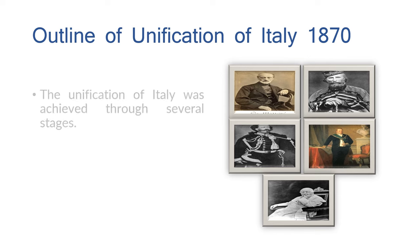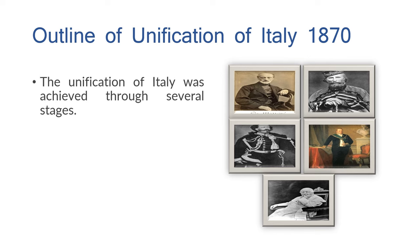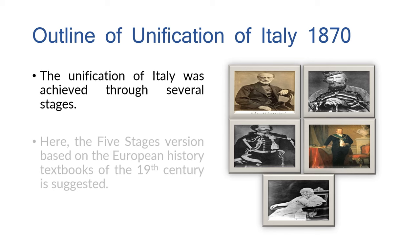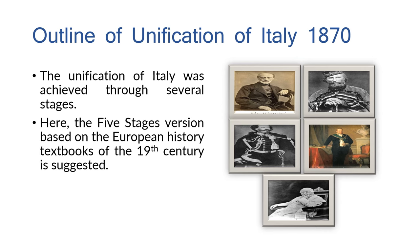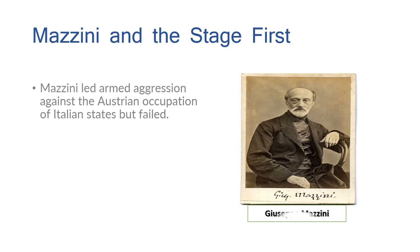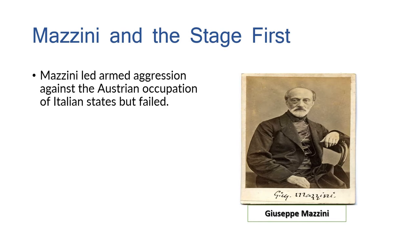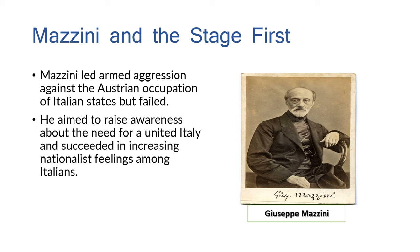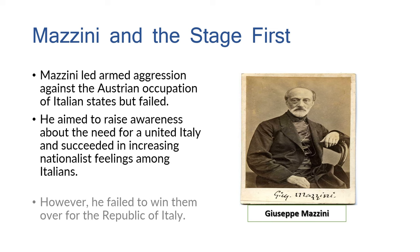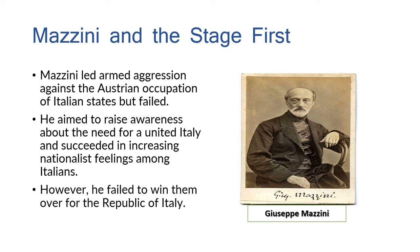The unification of Italy was achieved through several stages; the five-stage version based on the European history textbooks of the 19th century is suggested. Stage one — Giuseppe Mazzini: Mazzini led armed aggression against the Austrian occupation of Italian states but failed. He aimed to raise awareness about the need for a united Italy and succeeded in increasing nationalist feelings among Italians; however, he failed to win them over for a republic of Italy.